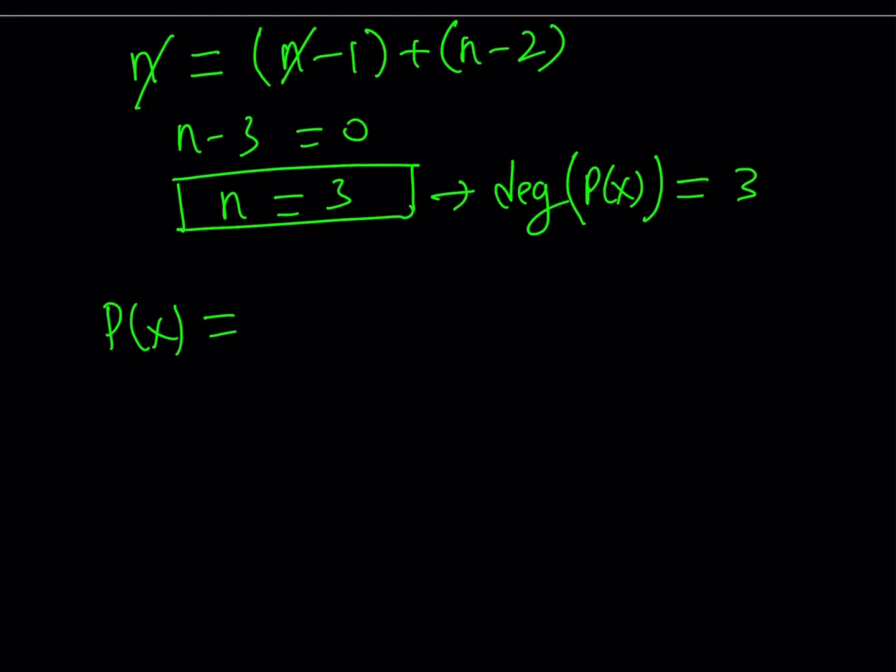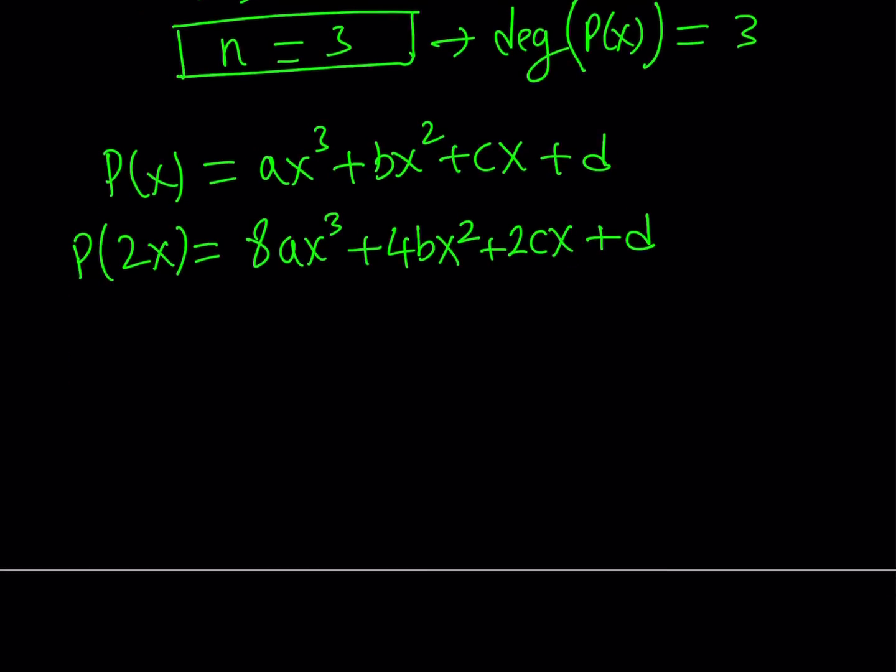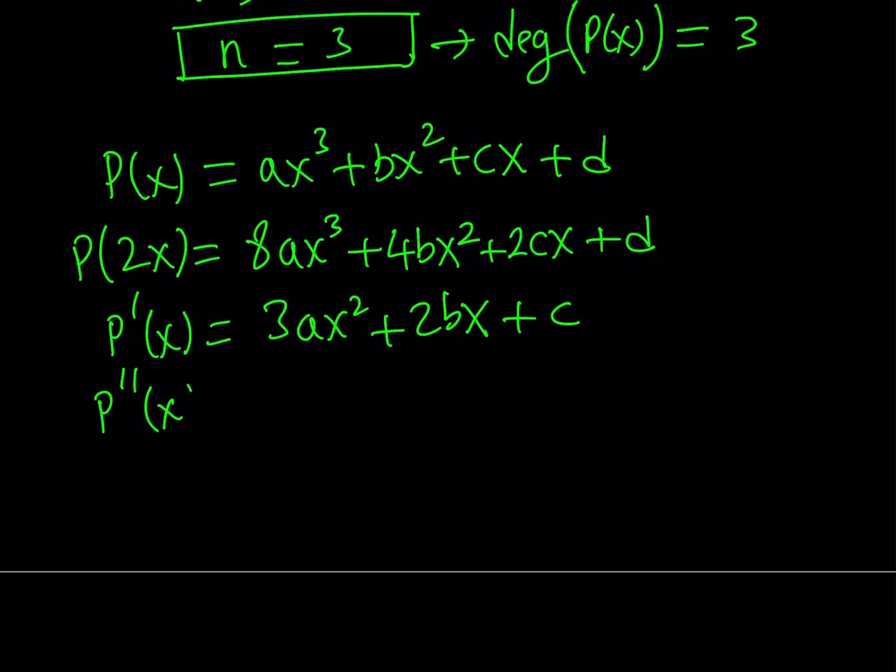Let's write it like this: P(x) = ax³ + bx² + cx + d. From here you can evaluate P(2x) easily by replacing x with 2x. That's going to give you 8ax³ plus 4bx² plus 2cx plus d. That's our P(2x). Let's go ahead and evaluate the derivatives. The first derivative is 3ax² + 2bx + c, and the second derivative is 6ax + 2b.